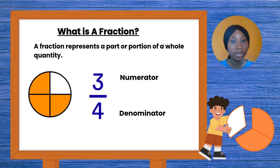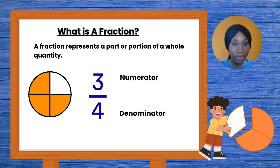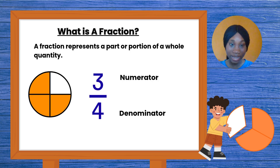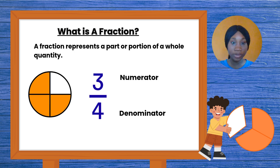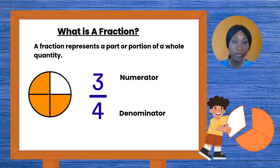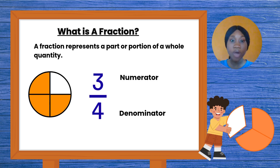Now let's talk about the parts of a fraction. A fraction has two numbers: a top number and a bottom number. You can see a line that is dividing or separating them. The number at the top is what? The numerator. And the number at the bottom is the denominator. For example, I have three over four here. So my three, which is at the top, is my numerator, and my four, which is at the bottom, is my denominator.